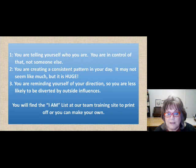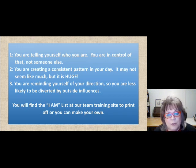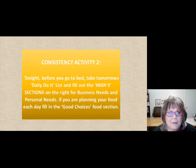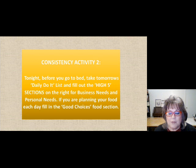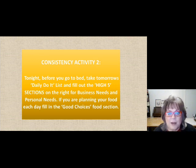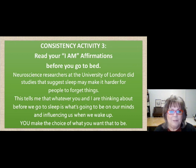You will find the I Am list at our team training site to print off, or you can simply make your own — take a sheet of paper, make three columns, put your titles at the top, and start deciding who you are. For Consistency Activity Number Two: tonight before you go to bed, take tomorrow's daily do-it list and fill out the high-five sections on the right for business needs and personal needs. If you're planning your food, plan that out too. Do this every night so you are on track for the next day and know what you're going to be doing.